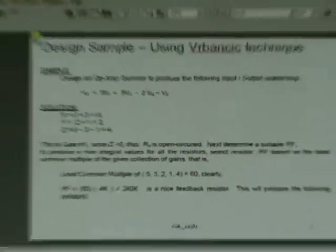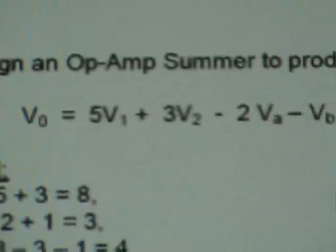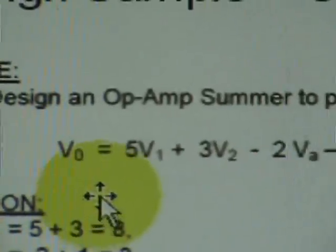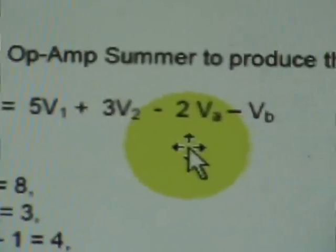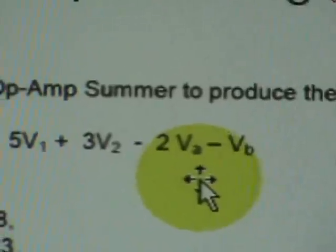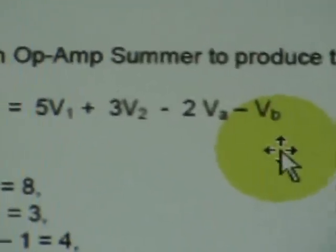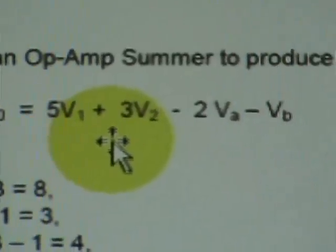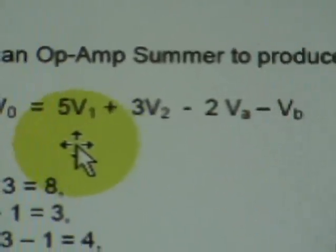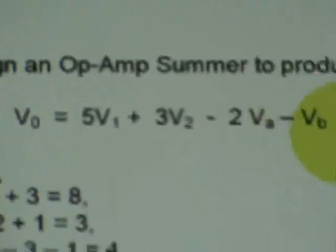So let us propose this design sample using the technique. Create a V sub zero signal, 5 times of V1 plus 3 times of V2 minus 2 times of VA minus VB. Later on, we will introduce each of these four inputs to be one volt apiece. So if you substitute that, you will have 5 plus 3 minus 2 minus 1 that is equal to 5.